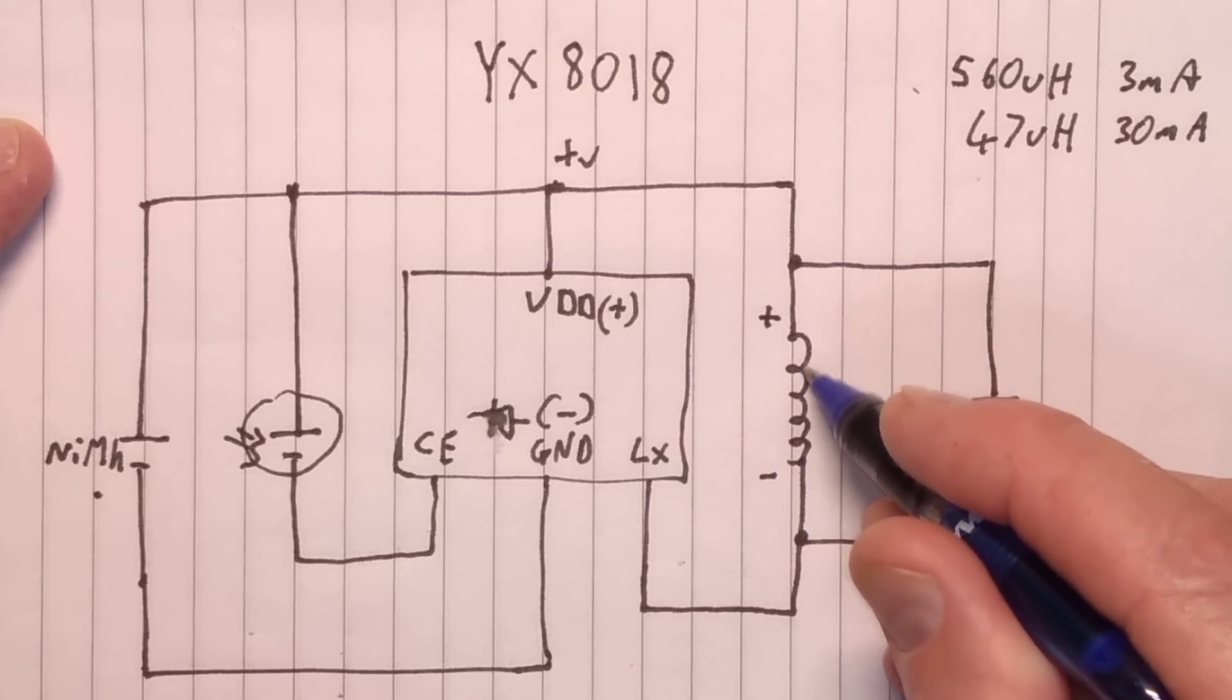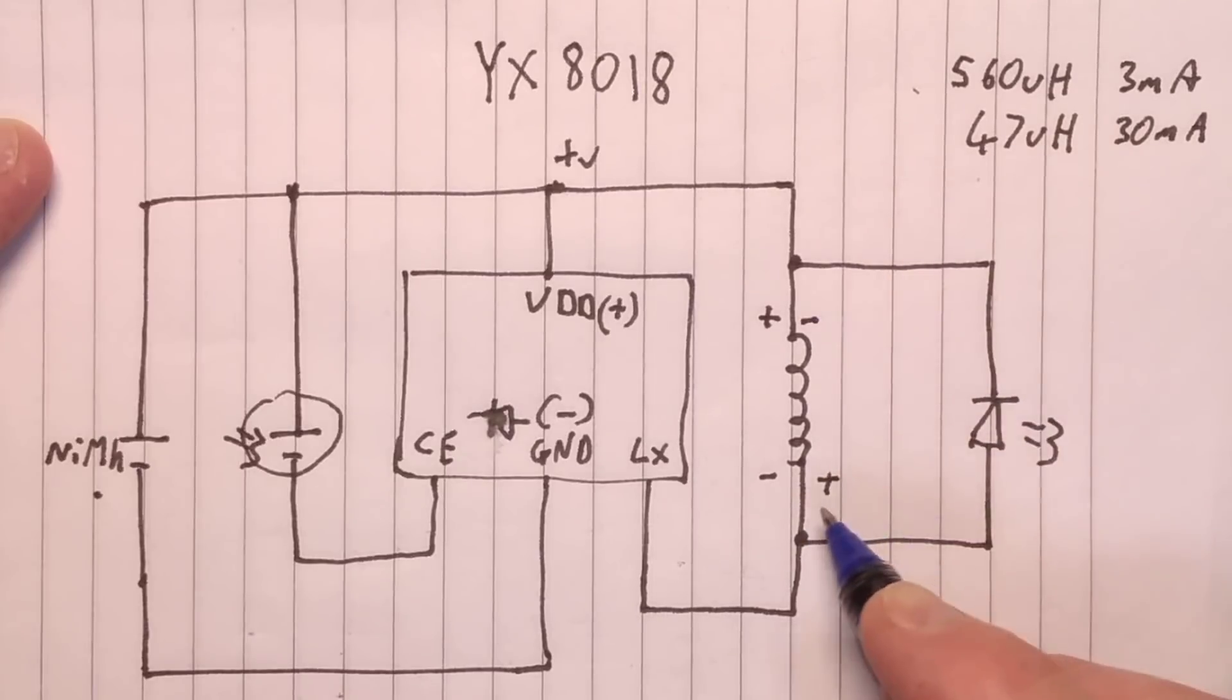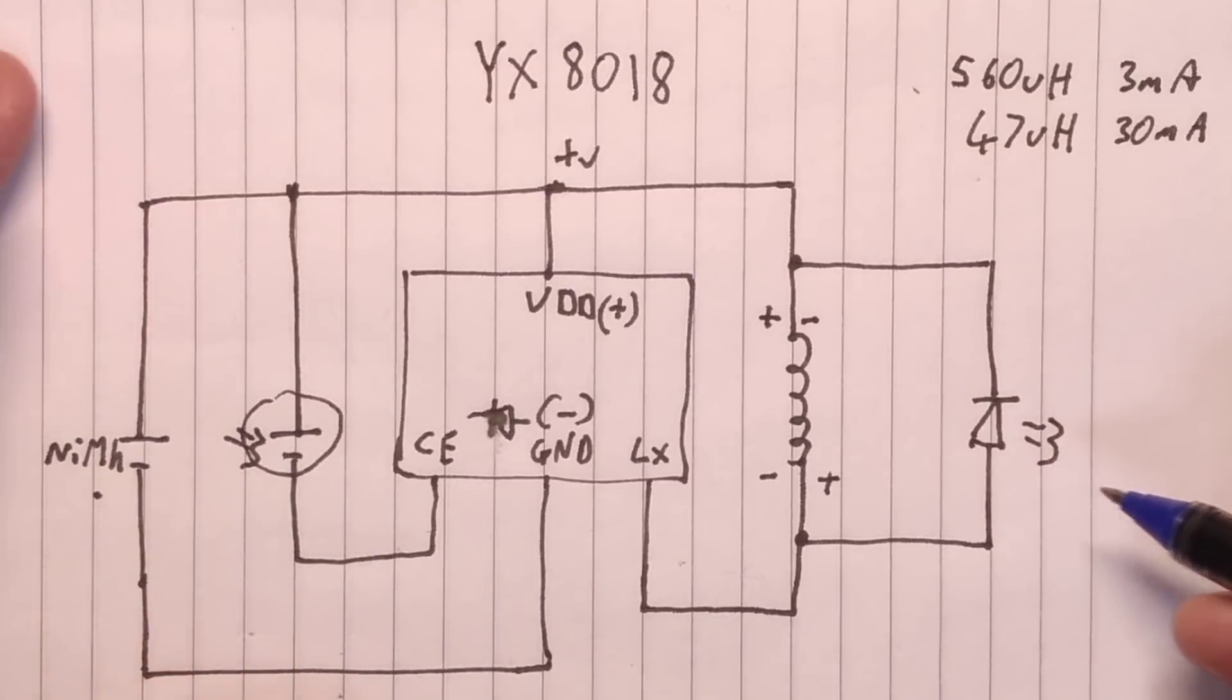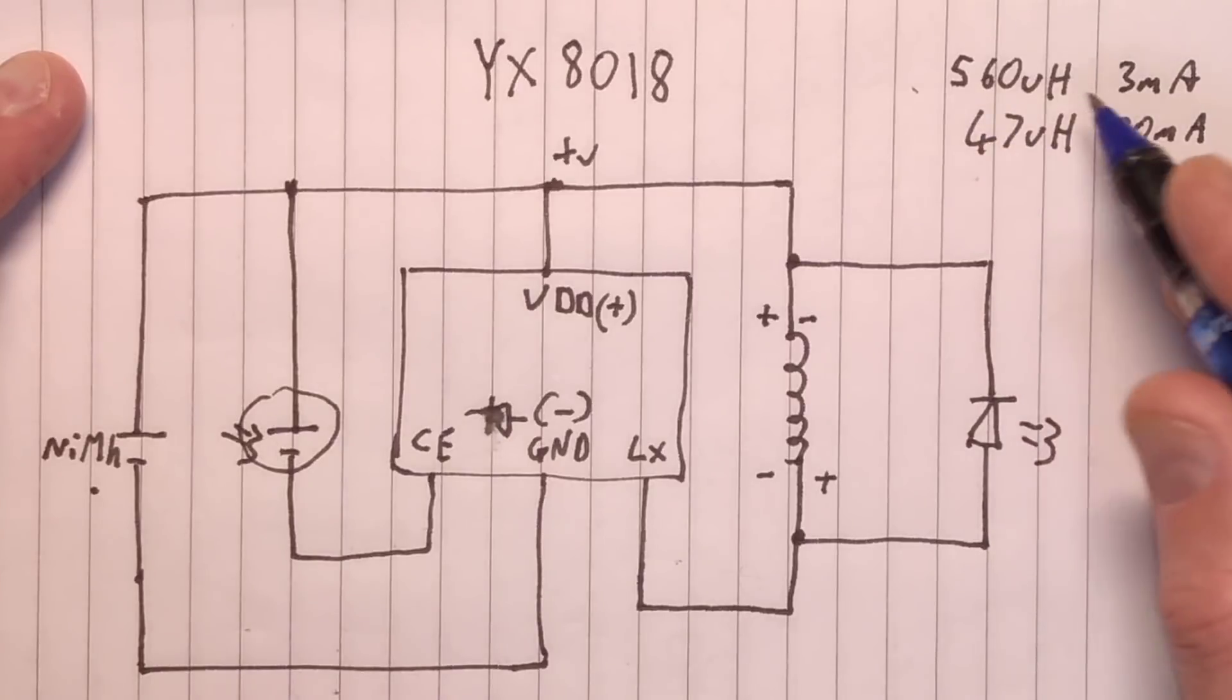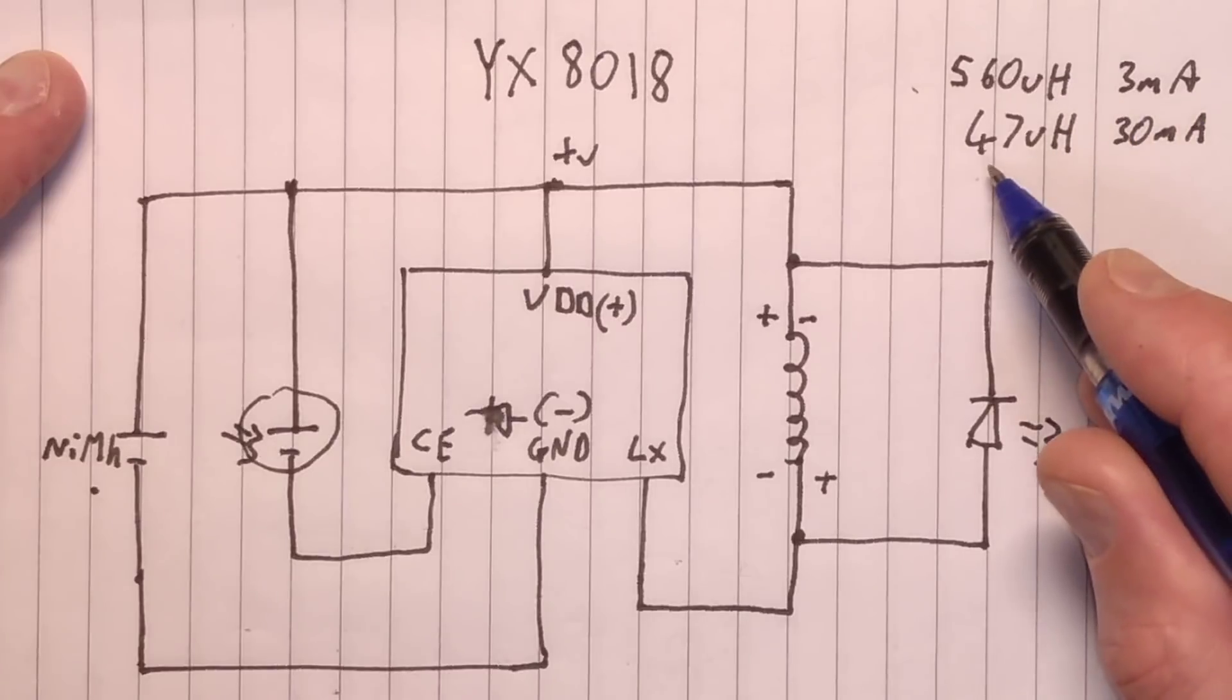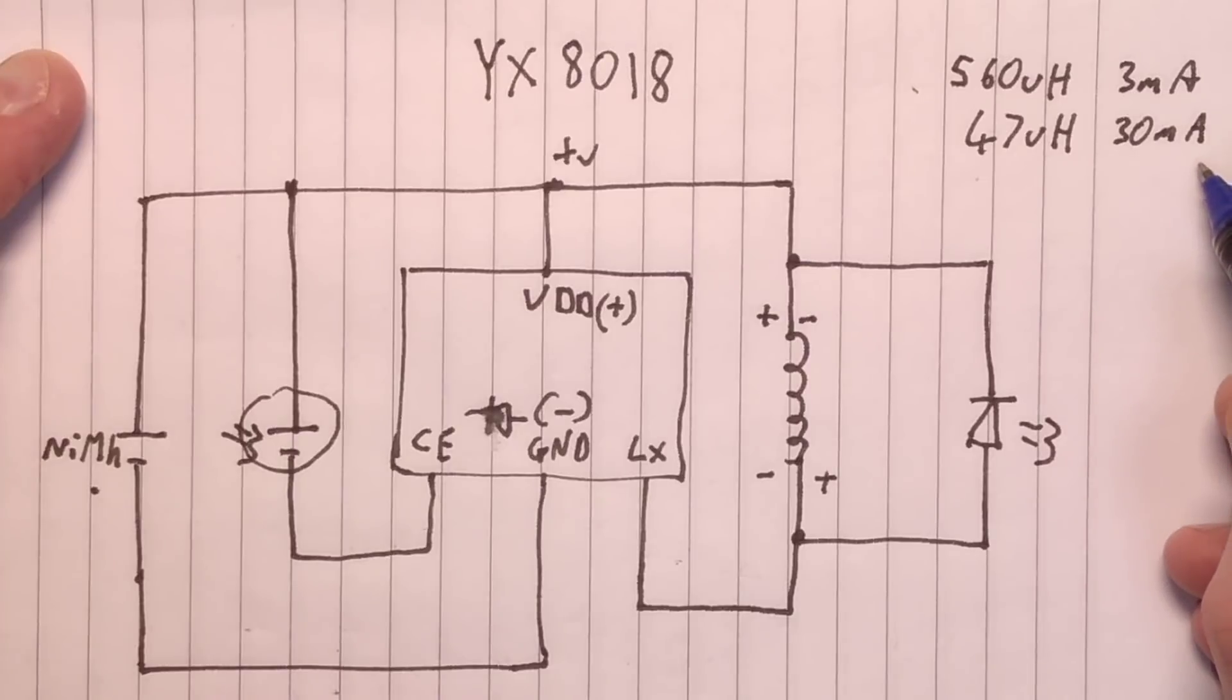And that puts an amount of magnetic charge into the inductor. When it turns off, the magnetic field collapses and this end then goes positive and this end goes negative, and then the current flows through the LED. And that's it in the configuration that you'd often find with just a white LED. The amount of current that flows can be adjusted. They give a range of values from 560 microhenry giving about 3 milliamps through the LED to a much lower value, 47 microhenry can go up to about 30 milliamps.